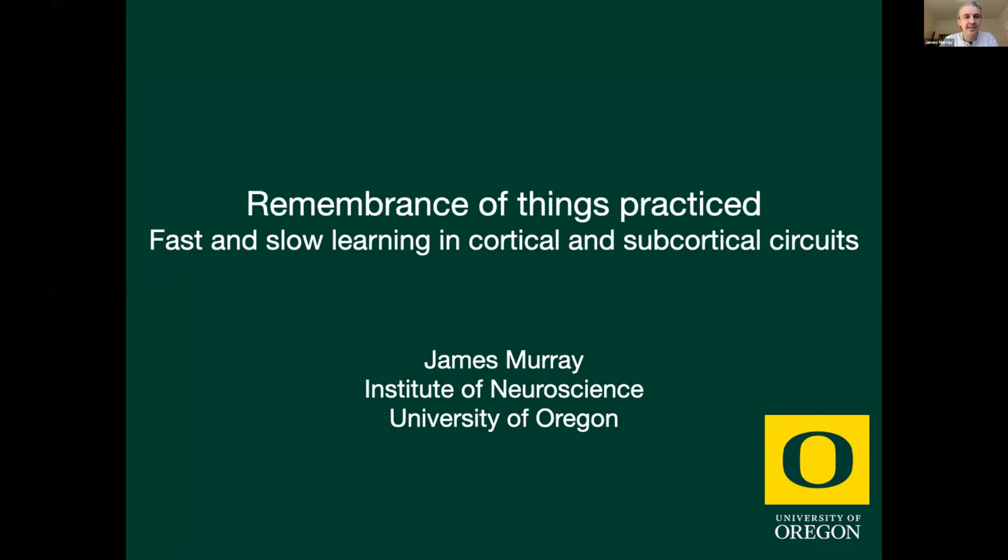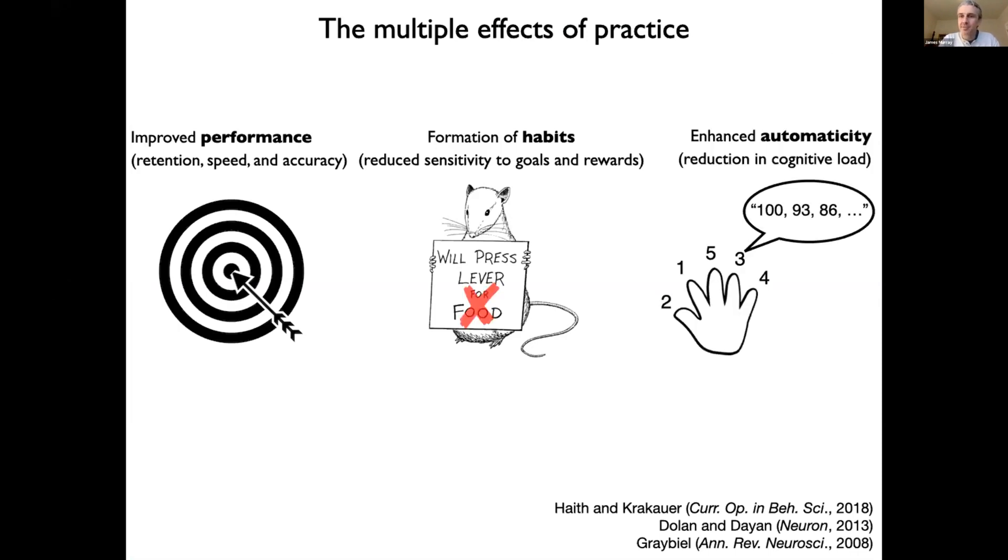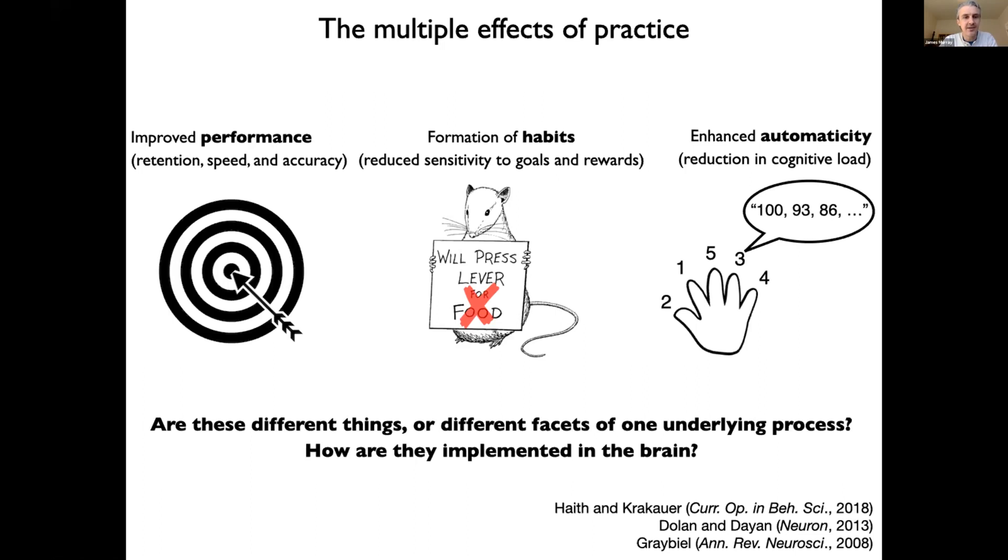What I'm going to talk about today is a theory of practice. So when we practice a behavior, multiple things are happening. Most obviously, our performance improves, but maybe less obviously we also form habits. In experiments this can be defined as reduced sensitivity to goals and rewards. And behaviors become more automatic. This can be thought of as a reduction in cognitive load or an increased ability to multitask. The questions I want to ask today are: are these all different things or are they just different facets of a single underlying process? And second, how might they be implemented in the brain?